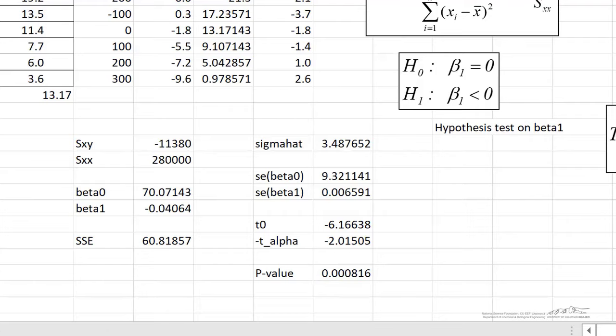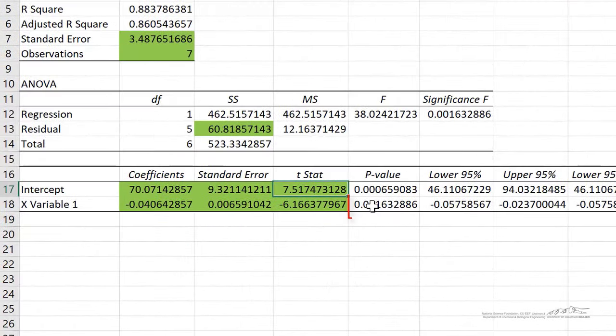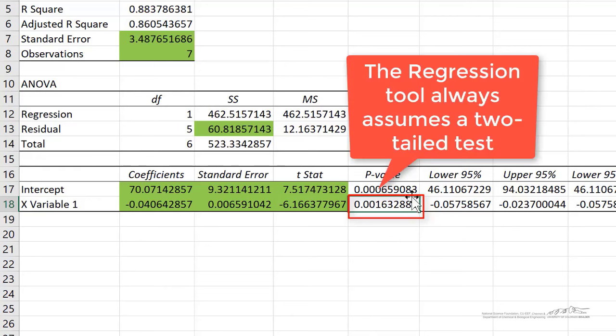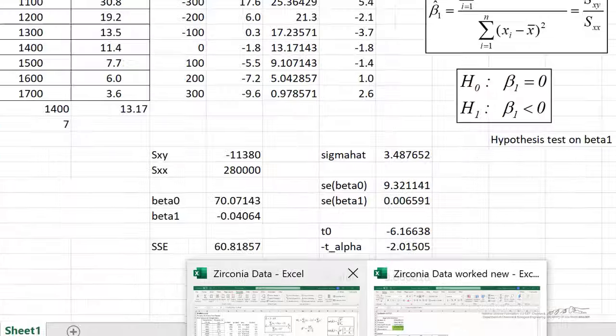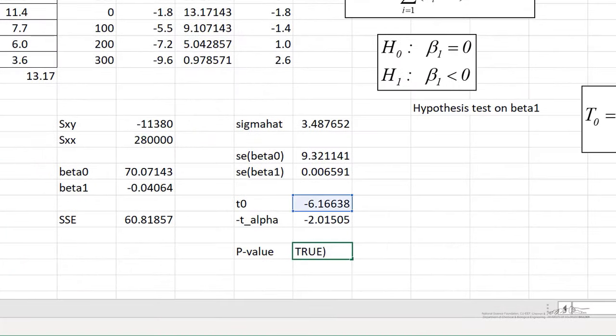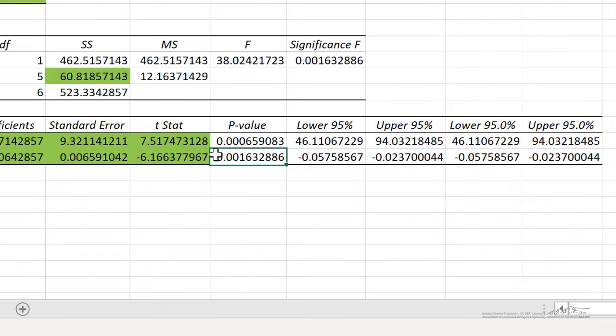You notice that that's not quite what the regression output is providing. The regression output is always assuming a two-tailed distribution. So if we actually multiply this by 2, 2 times that, we would get the same p-value 0.0016 that the regression output is providing. And you can do the same thing for the intercept.